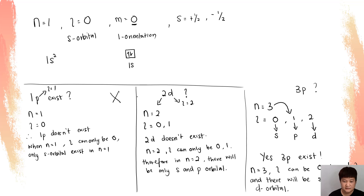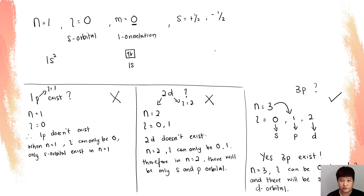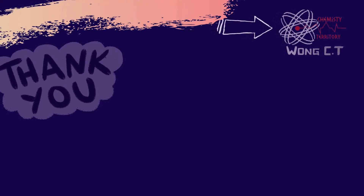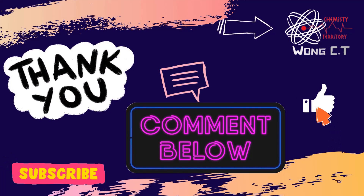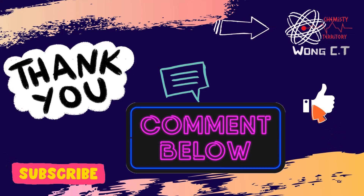So 1p does not exist, 2d does not exist, but 3p does exist. I hope you understand now how to write spdf notation and orbital diagrams — make sure you can write them properly. We will look into the rules and regulations in detail in the next video. Don't forget to like and subscribe. Have a good day!